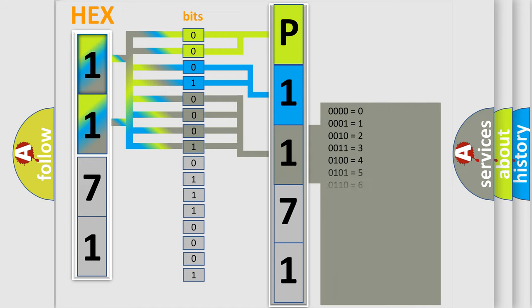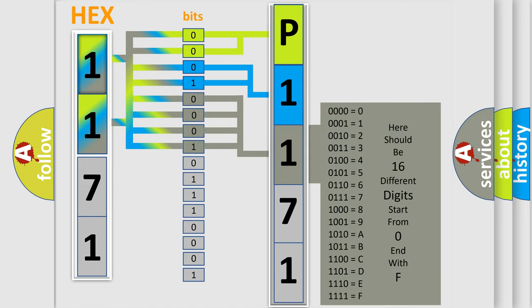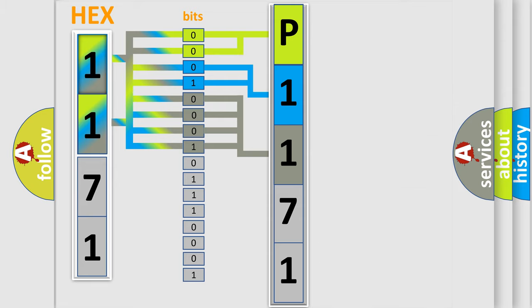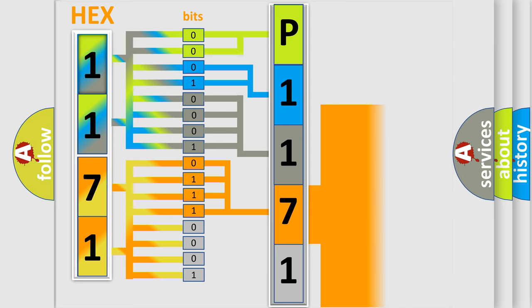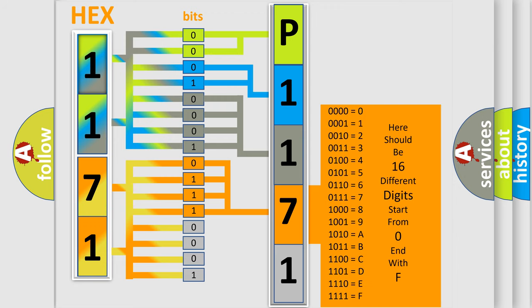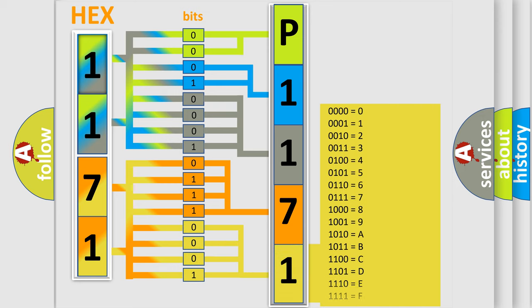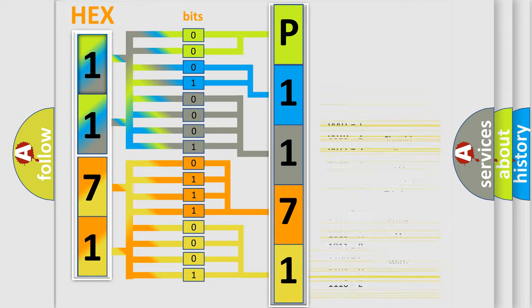The second byte is composed of a combination of eight bits. The first four bits determine the fourth character of the code, and the combination of the last four bits defines the fifth character. A single byte conceals 256 possible combinations.